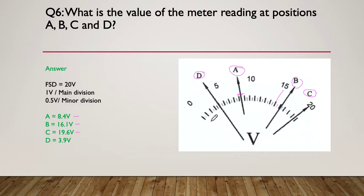And then finally position D. It was 1, 2, 3 divisions up, and almost into the fourth division but not quite. I reckon about 3.9 for that one there.